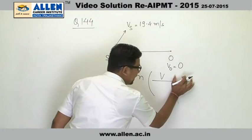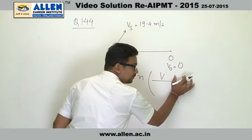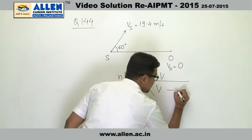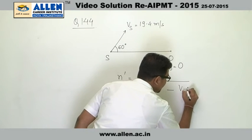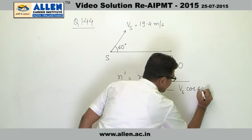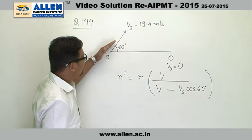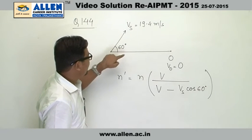So we are taking the speed of v0 to be 0. Now v, that is speed of sound, minus vs cos 60 degrees. Because it has been said that the source is moving with the speed of 19.4 meters per second